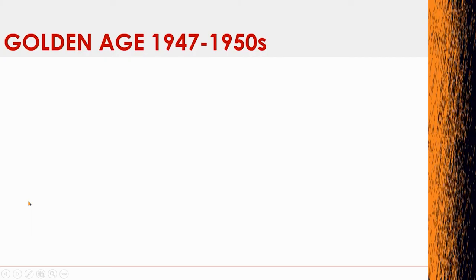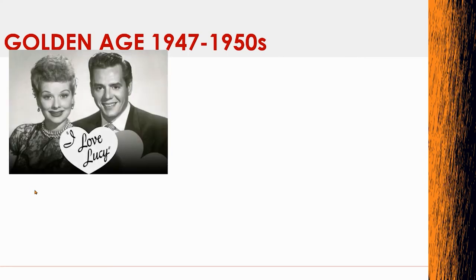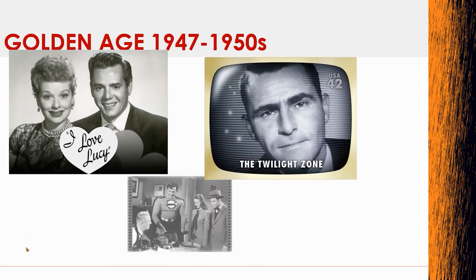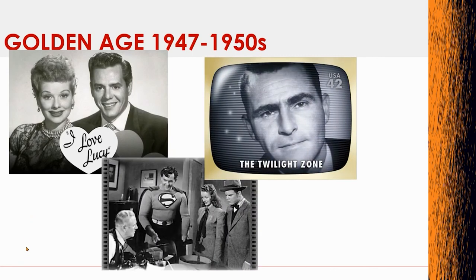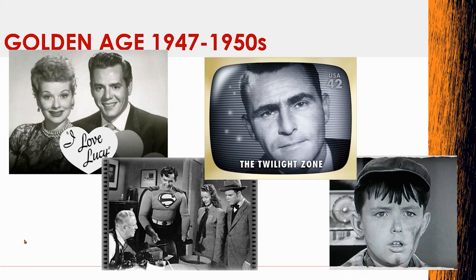The golden age of television was really from 1947 into the 1950s — shows like 'I Love Lucy,' 'The Twilight Zone,' the original Superman, and 'Leave It to Beaver.' That would be considered the golden age. After 1941, everybody went out and started buying all kinds of TVs all over the place.